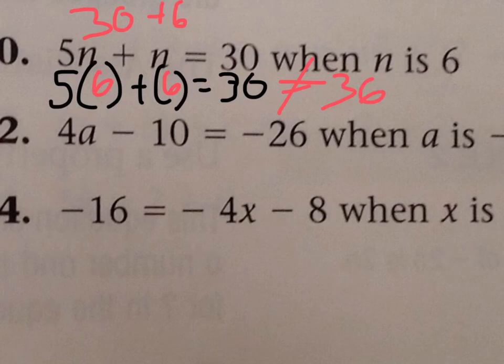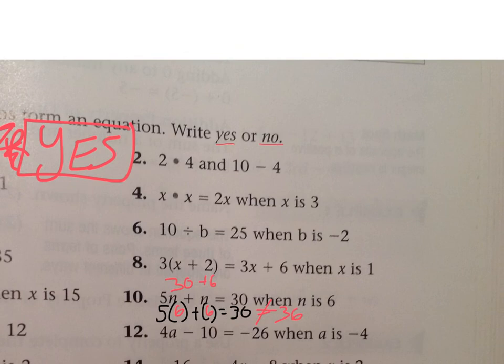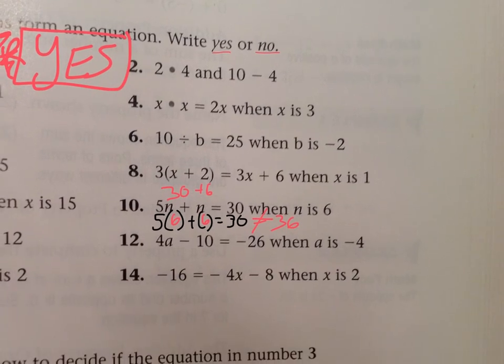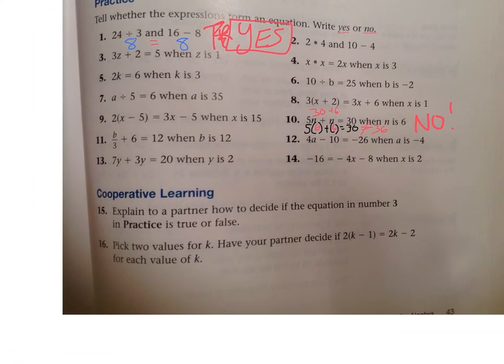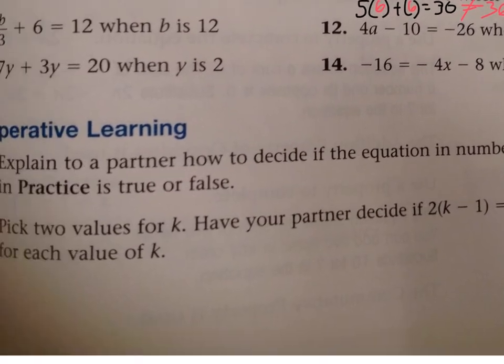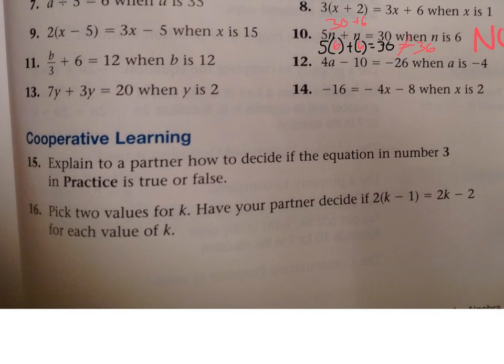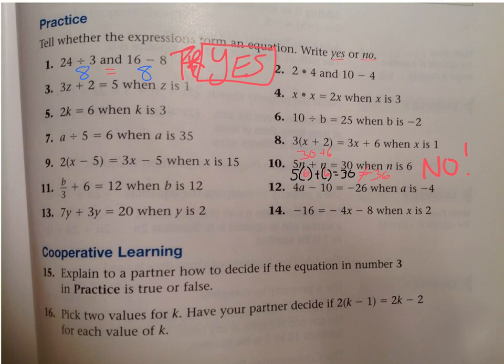And I know that 30 does not equal 36. So I'm going to write false or, as the instructions say, you're going to write no. So 36 does not equal 6. So for number 10, I'm going to put a nice no. And I'm going to put it with an exclamation point. Alright, ladies and gentlemen, you're going to do numbers 1 through 14. You had a little help with number 1 and number 10. When you're done, we're going to do the cooperative learning with a partner. You're going to tackle 15 and 16. I cannot wait to see your work. Please let me know if you have any questions. Good luck.